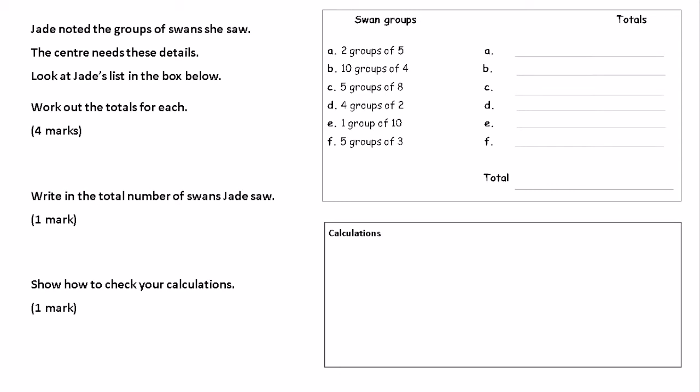What they're asking you to do is really recall times table facts here. If you get your first 3 questions right - 2 groups of 5, 10 groups of 4, 5 groups of 8 - you're going to get 1 mark. If you get the next one correct, you're going to get another mark.